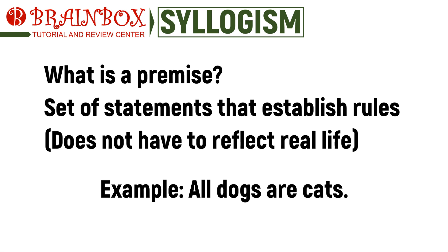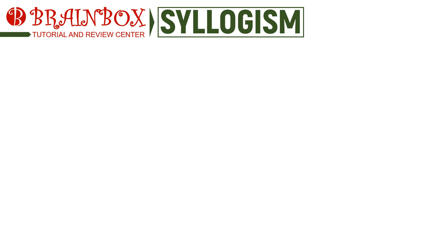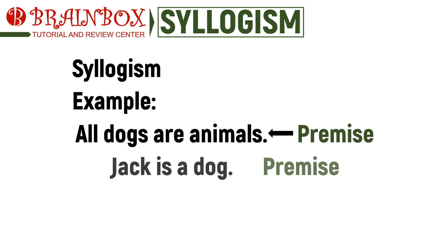At least within the problem, inside the syllogism all dogs are considered cats. A conclusion, on the other hand, is the logical output we expect after analyzing the premises of a syllogism. Using logic rules, we can validate if the conclusion makes sense or if it violates logic. Let's have a look at the following example to see premises and conclusions in action.